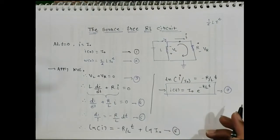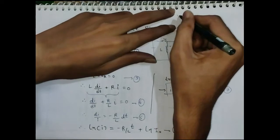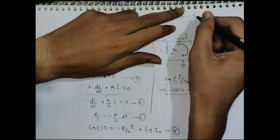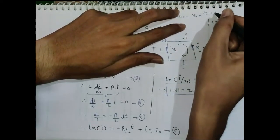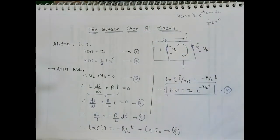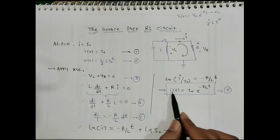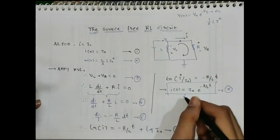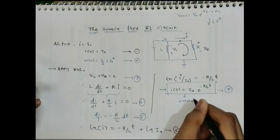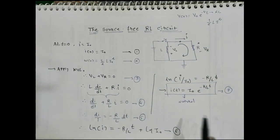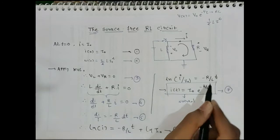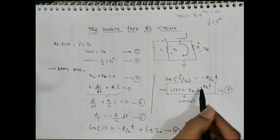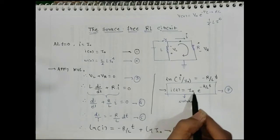This is the natural response because no independent source is connected in the circuit. The response shows an exponential decay of the initial current I₀. The negative exponent confirms exponential decay. If we plot I(t) versus time, the maximum value is I₀ at t = 0 and the current decays exponentially from there.